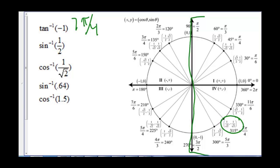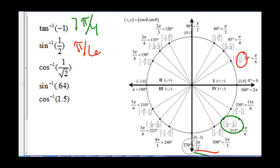To evaluate inverse sine of 1/2, we are looking at the right side of the unit circle, and where does sine equal 1/2? At pi over 6. Then for inverse cosine, we look at the top half of the unit circle and find where cosine equals 1 over square root of 2 — that's at pi over 4.